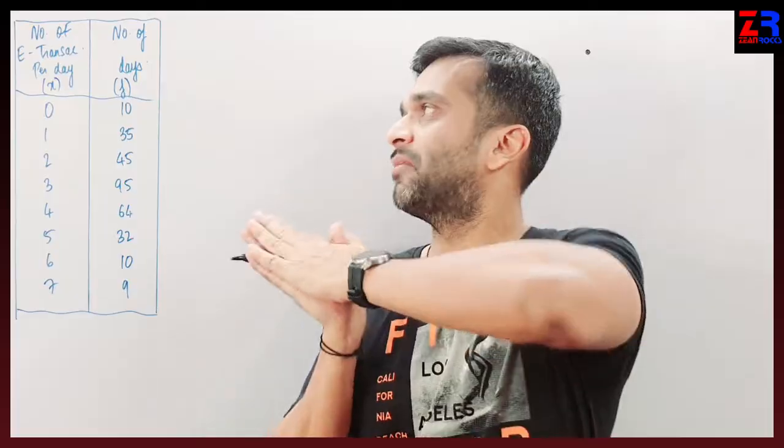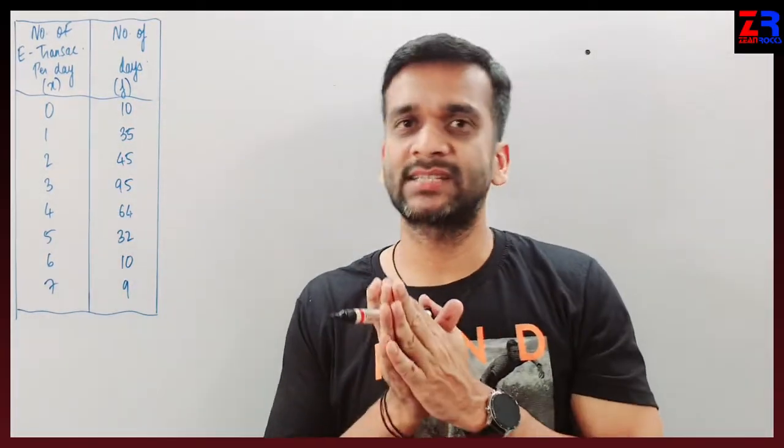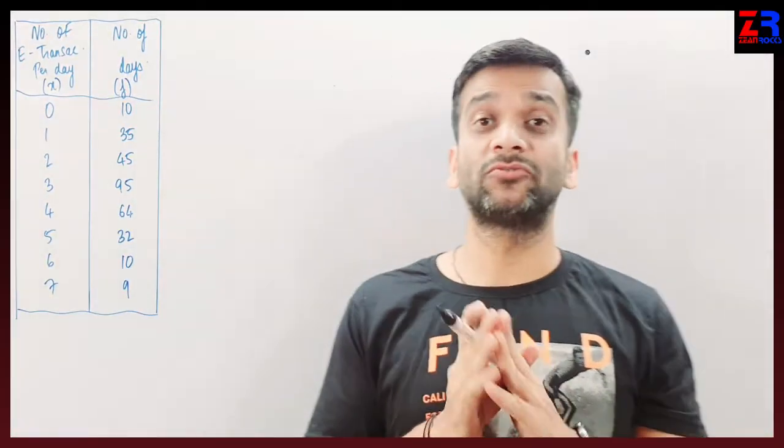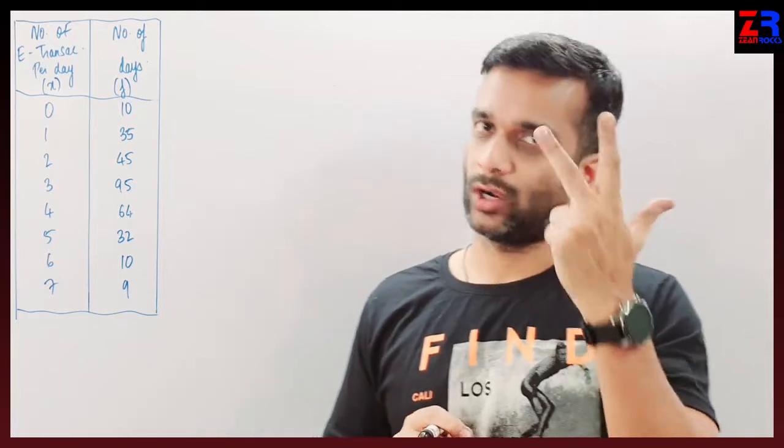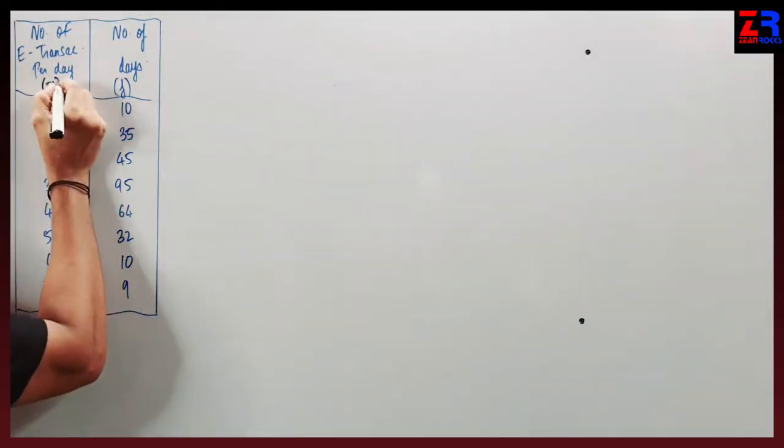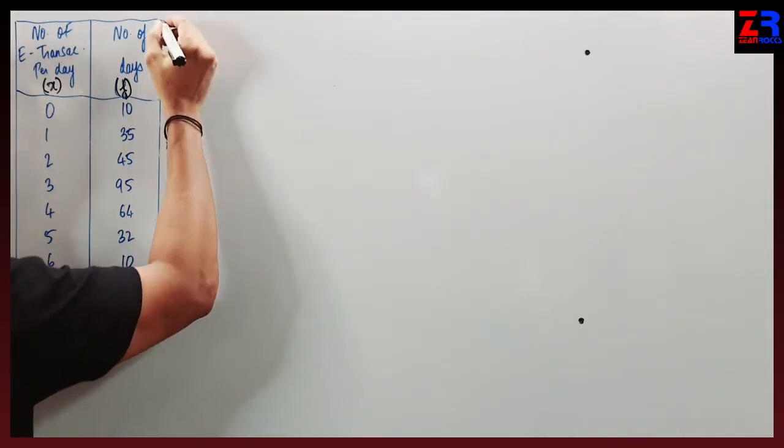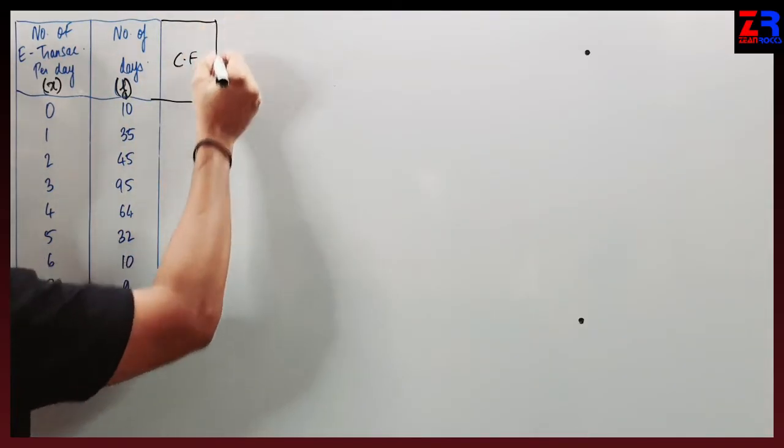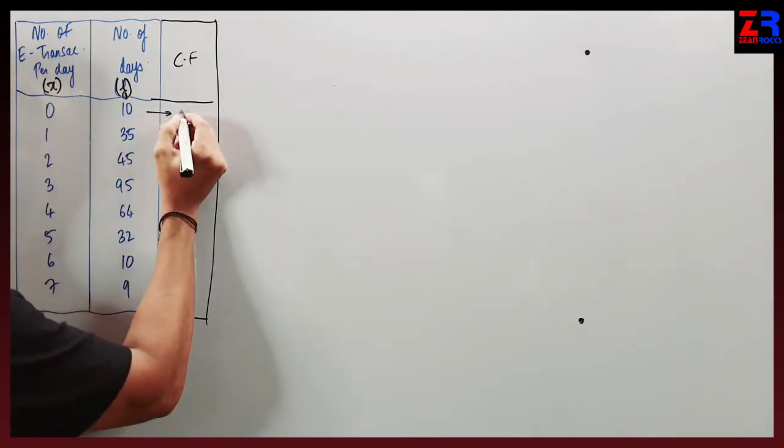This is sum number 5. Number of e-transactions per day are given and number of days are given. We are supposed to find all three quartiles: Q1, Q2, and Q3. The first column is X, second column is F, now prepare the CF column - cumulative frequency less than type.